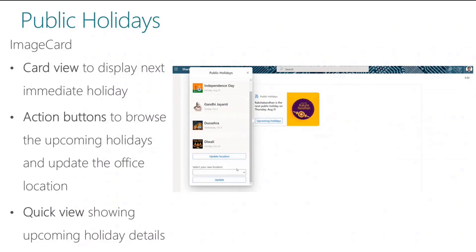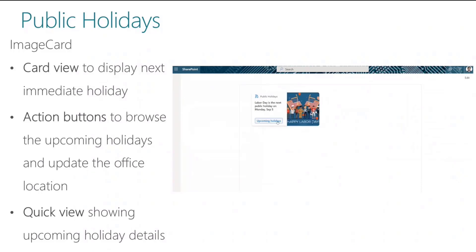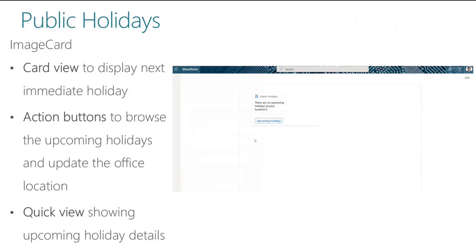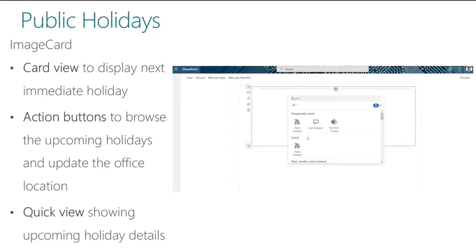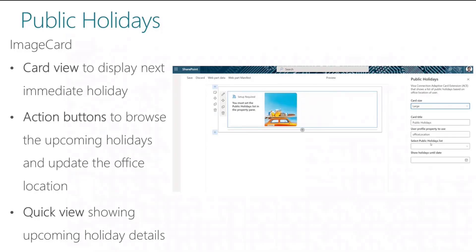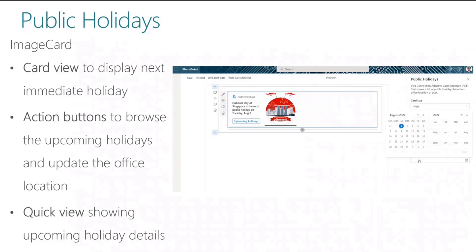Specifically, this solution displays the current logged-in user's public holidays in card view based on their office location. With the action button on the card, it helps employees browse the quick view which showcases all public holidays for their location, and from there they can update their office location. This sample is developed with SPFx version 1.15.0 and is available to download and use under the PnP sample repository at the URL shown on screen.